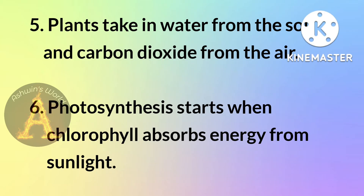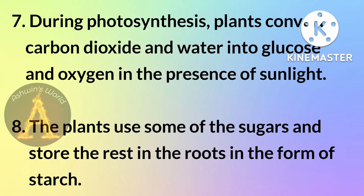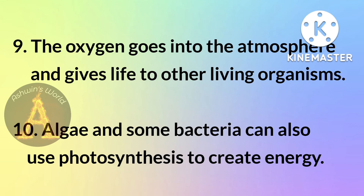During photosynthesis, plants convert carbon dioxide and water into glucose and oxygen in the presence of sunlight. The plants use some of the sugars and store the rest in the roots in the form of starch.